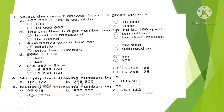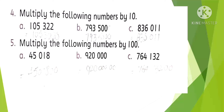Question 4: Multiply the following numbers by 10. When multiplying any number by 10, add one zero on the right side — the number stays the same but one zero is appended. Question 5: Multiply the following numbers by 100. When multiplying by 100, add two zeros on the right side of the number.